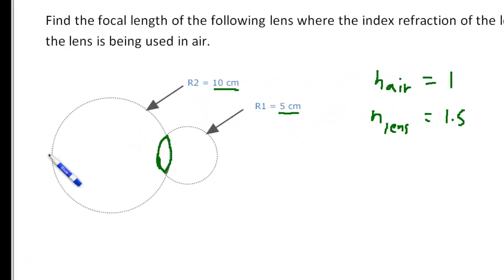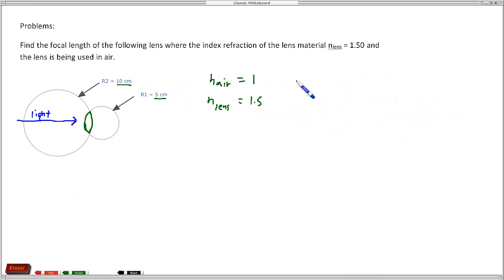So the way to think about it is we have light coming in here, so here's our light coming into the lens. And the way to think about how to find the sign is: if the light hits the surface of the lens before it gets to the center of the radius of curvature, then that means a positive number for the radius.